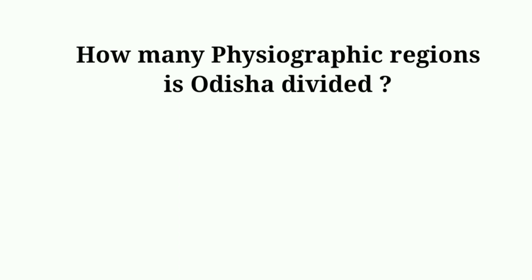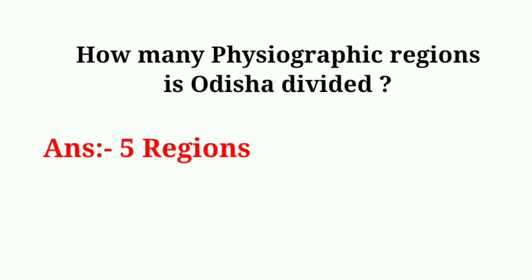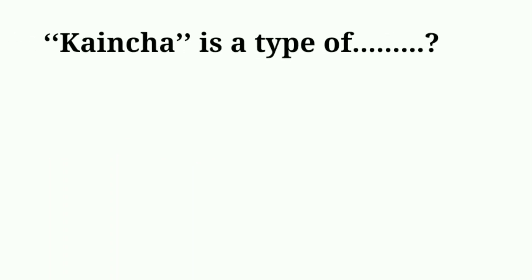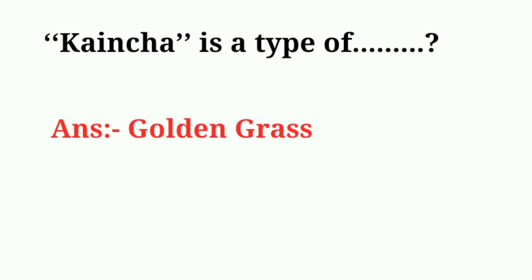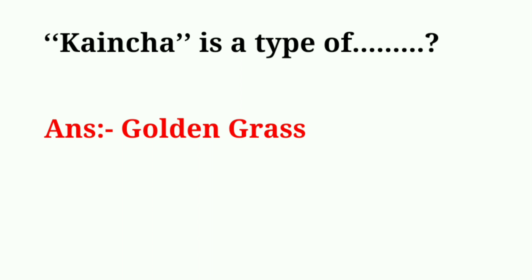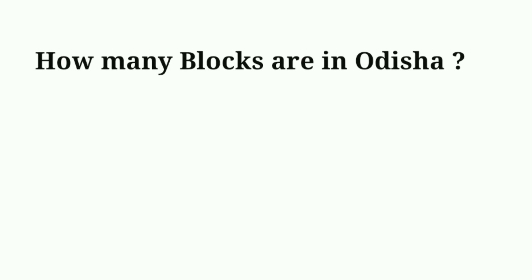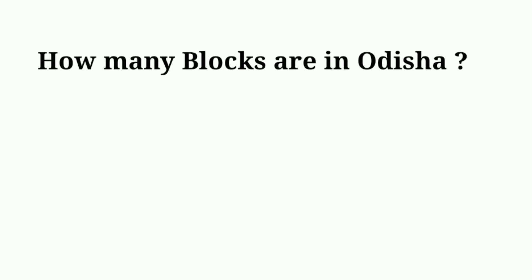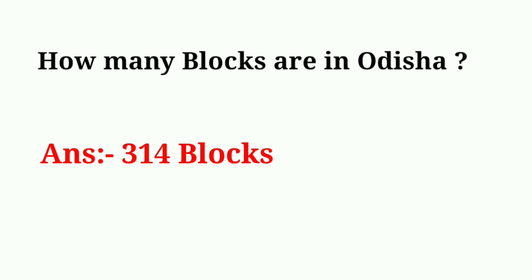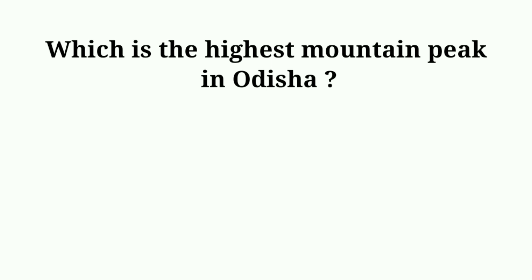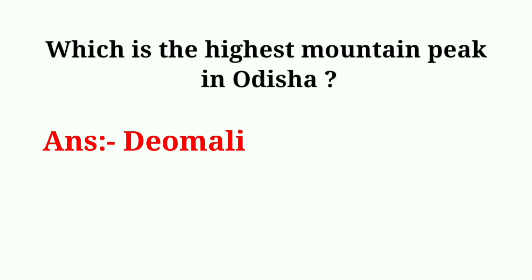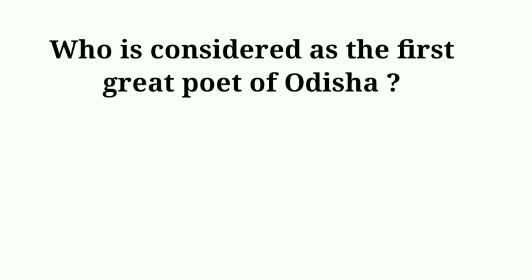How many physiographic regions is Odisha divided into? Answer: 5 regions. Kaicha is a type of? Answer: Golden grass. How many blocks are in Odisha? Answer: 314 blocks. Which is the highest mountain peak in Odisha? Answer: Deomali. Who is considered as the first great poet of Odisha? Answer: Sarala Das.